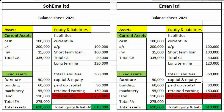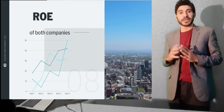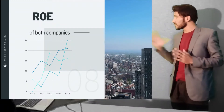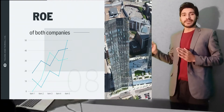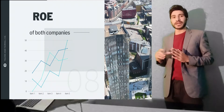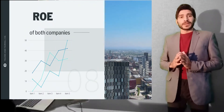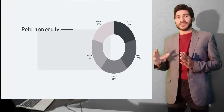Here we have two companies: one is Soyman Limited and the second is Iman Limited. Let us measure the performance of these two companies. A company will be considered a good company if they have a good ROE. Let's calculate their ROE and on the basis of their ROE we will determine how each company has performed.